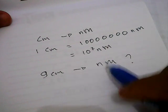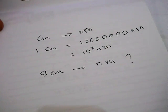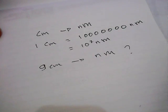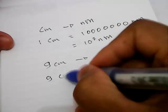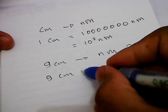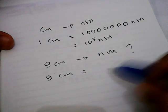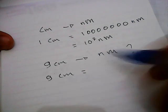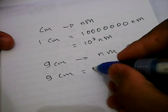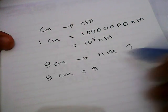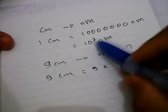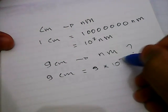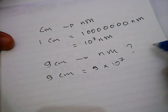The first thing you need to do is write 9 centimeters and give it an equal sign. Then you need to put this 9 here, and then you need to multiply 9 by 10^7.